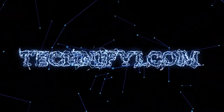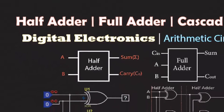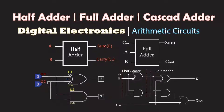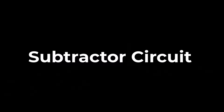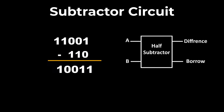Welcome to technify.com. In the previous video we learned about binary adder circuits, and in this video we will learn about another arithmetic circuit: the binary subtractor circuit. A digital subtractor is a circuit that subtracts two binary numbers. It is a fundamental building block of digital circuits, used in many applications such as calculators, computers, and digital signal processors. Same as the adder circuit, the subtractor also has two types.